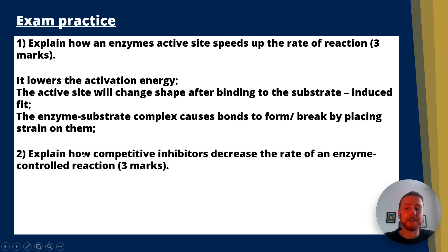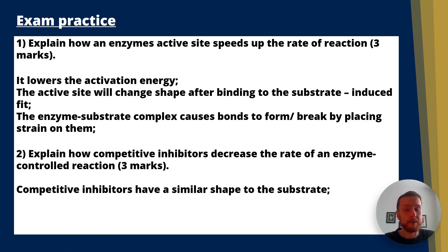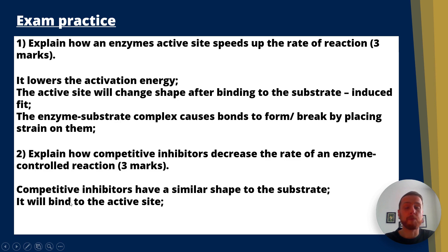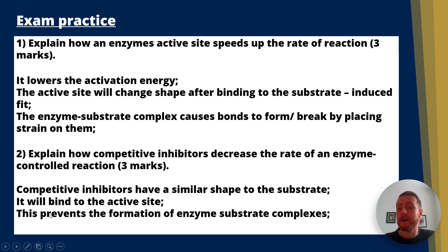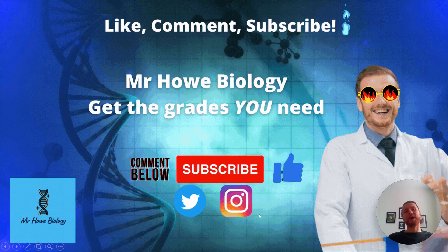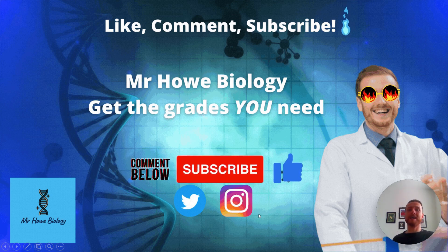Question two: Explain how competitive inhibitors decrease the rate of an enzyme-controlled reaction. The answer: first mark, competitive inhibitors have a similar shape to the substrate. Second mark, they bind to the active site. Third mark, this prevents the formation of enzyme-substrate complexes. I hope you got a lot from this video today.